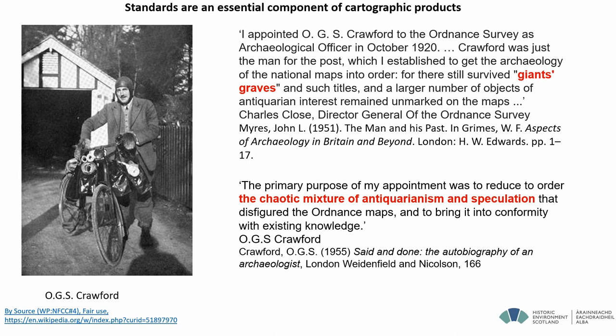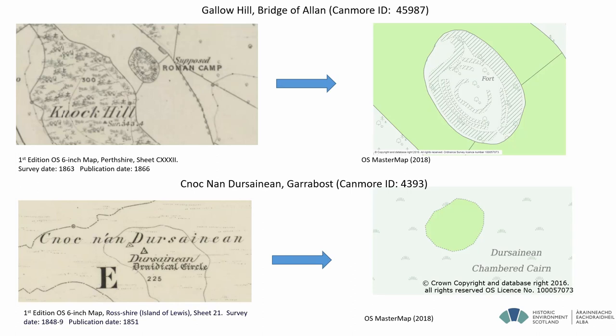Standards in mapping go way back to 1920 with the appointment of OGS Crawford to the Ordnance Survey, to address an issue about the inconsistency of how people were referring to archaeological sites on the Ordnance Survey map — giant graves, Druidical temples — to address the issue of a chaotic mixture of antiquarianism and speculation. So it's moving from the supposed Roman camp on the left to a fort, with consistent, applied, authoritative standard terminology, and again through the circle to chambered cairn.